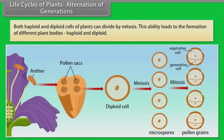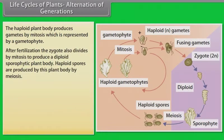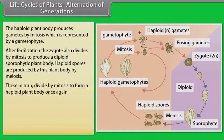Life cycles of plants — alternation of generations. Both haploid and diploid cells of plants can divide by mitosis. This ability leads to the formation of different plant bodies, haploid and diploid. The haploid plant body produces gametes by mitosis, represented by the gametophyte. After fertilization, the zygote also divides by mitosis to produce a diploid sporophytic plant body. Haploid spores are produced by this plant body by meiosis, which in turn divide by mitosis to form a haploid plant body once again.